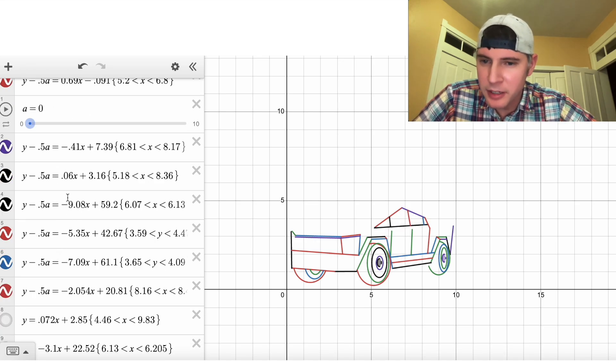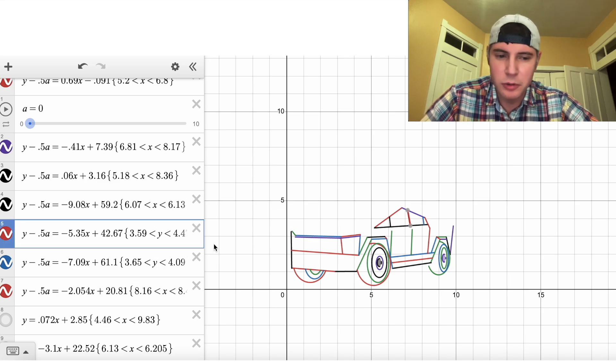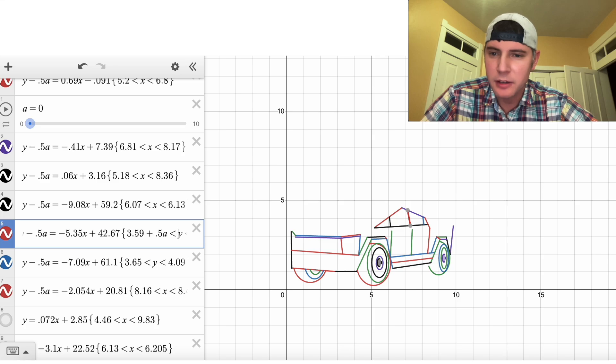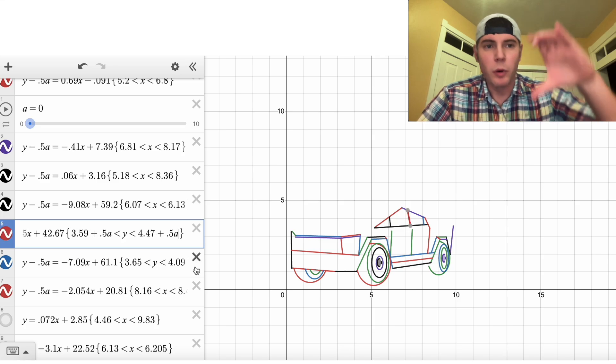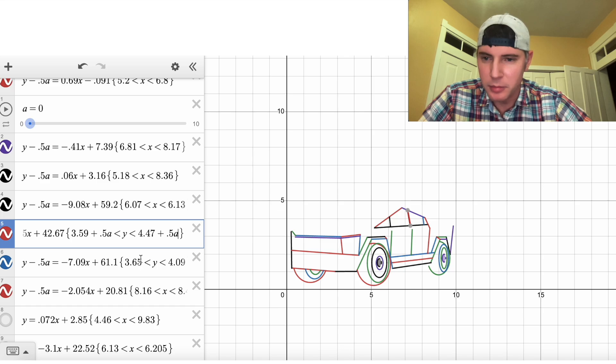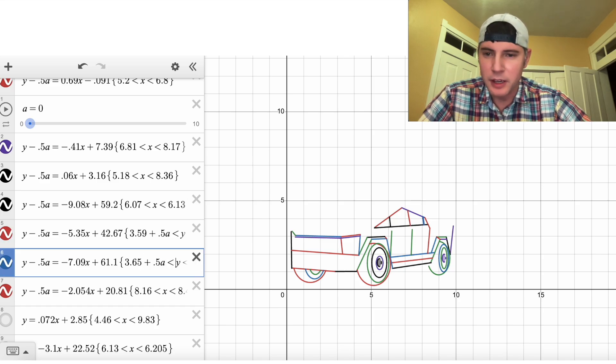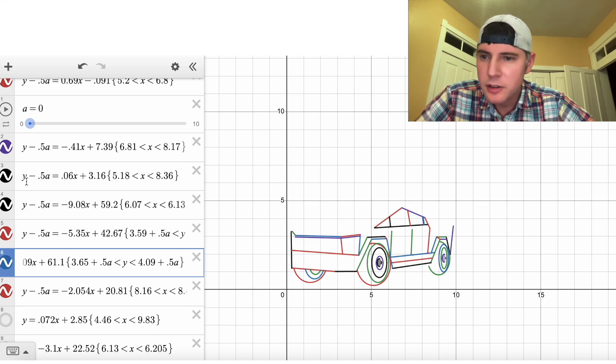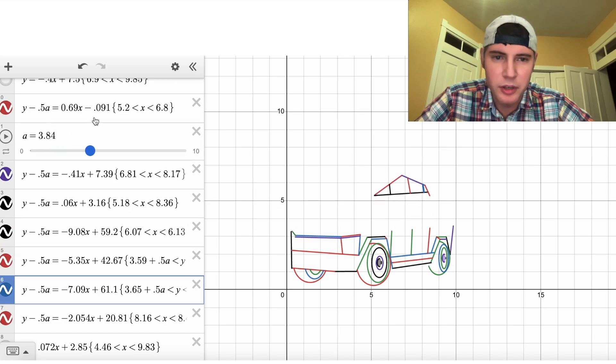So now I've added it to all of them and I noticed two of them have a domain restriction in terms of Y. So for those, we want to add 0.5 A to both the max and the min. So that means the Y will shift up when the whole thing moves up. We'll say plus 0.5 A. And for this one, we'll say plus 0.5 A. So now when I move A, the whole thing will move up together.